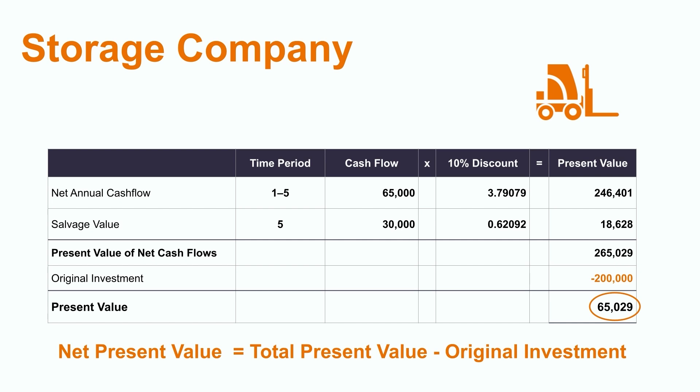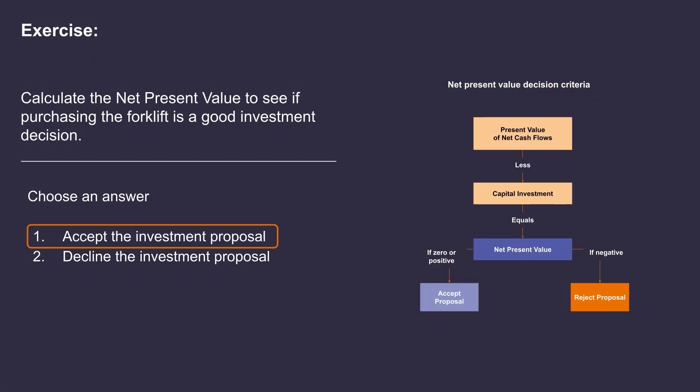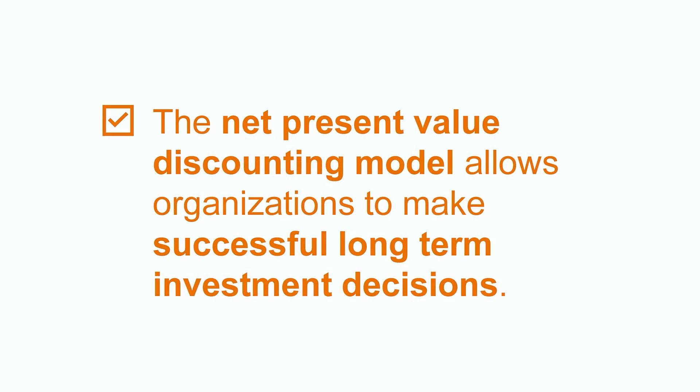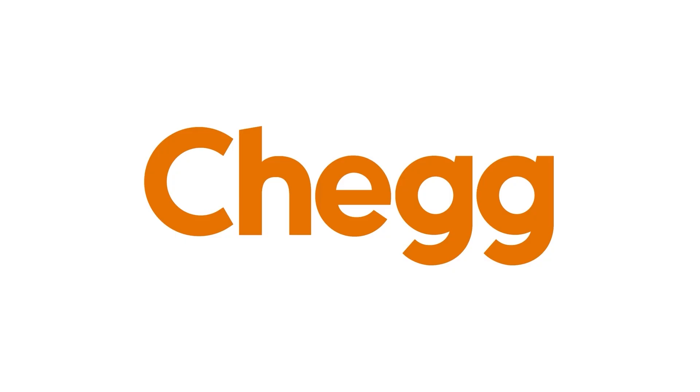Our last step is to subtract out the original investment of $200,000, which gives us our final net present value of $65,029. Since the net present value figure is a positive value, this means that this looks to be a profitable investment and the organization can consider accepting the proposal. Remember, in order for organizations to make successful long-term investment decisions, they need to consider the impact of the time value of money, and the net present value discounting model allows them to do this effectively. If you're interested in learning more about this topic or others, please feel free to check out our additional videos on many more related topics. Thank you.